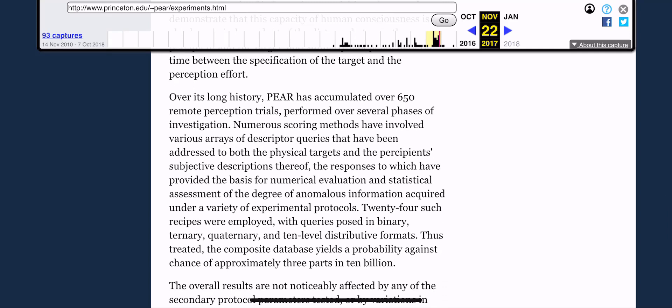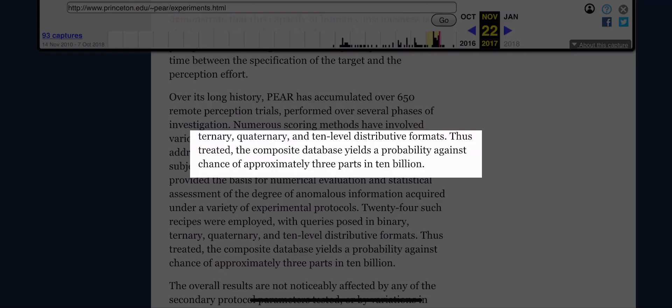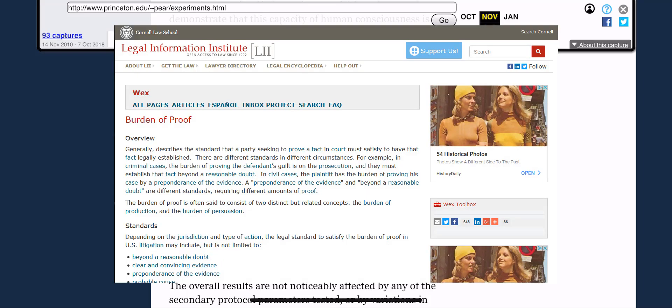This next paragraph mentions that PEAR has accumulated over 650 remote perception trials, but what I find most interesting is the last sentence in this paragraph, which says: Thus treated, the composite database yields a probability against chance of approximately 3 parts in 10 billion. So if this information was presented in a court of law, consciousness would clearly win as being primary to our physical reality.